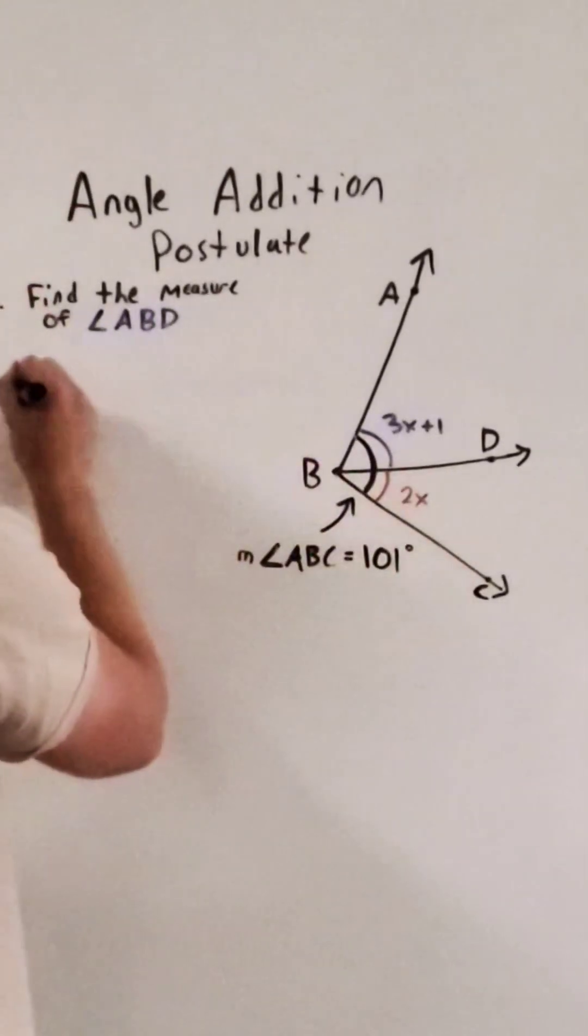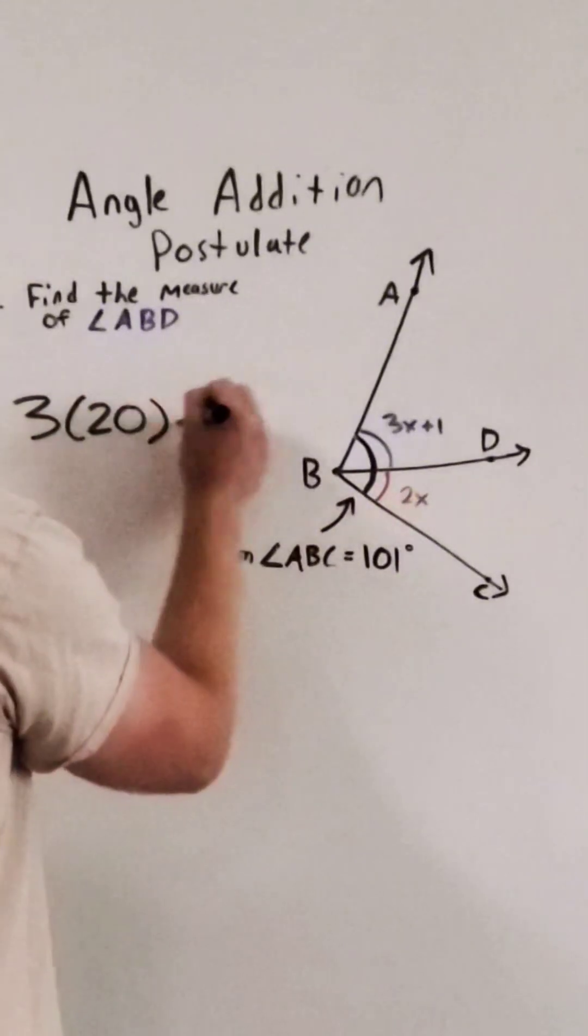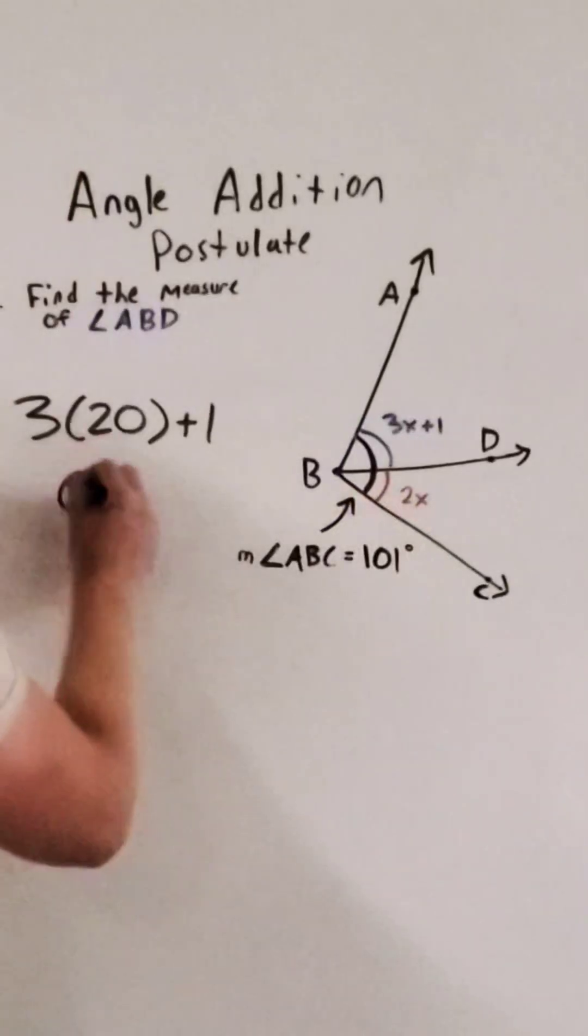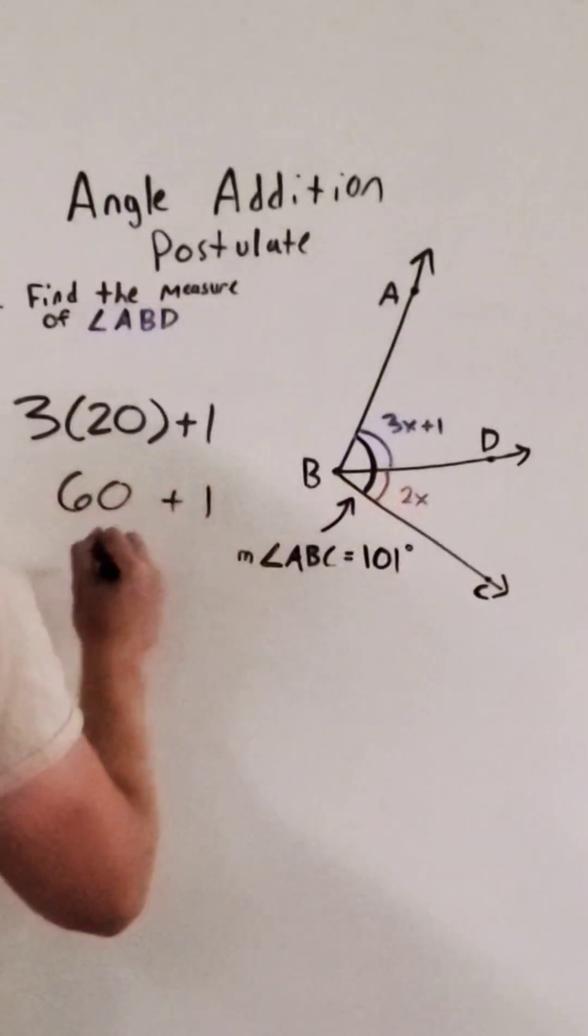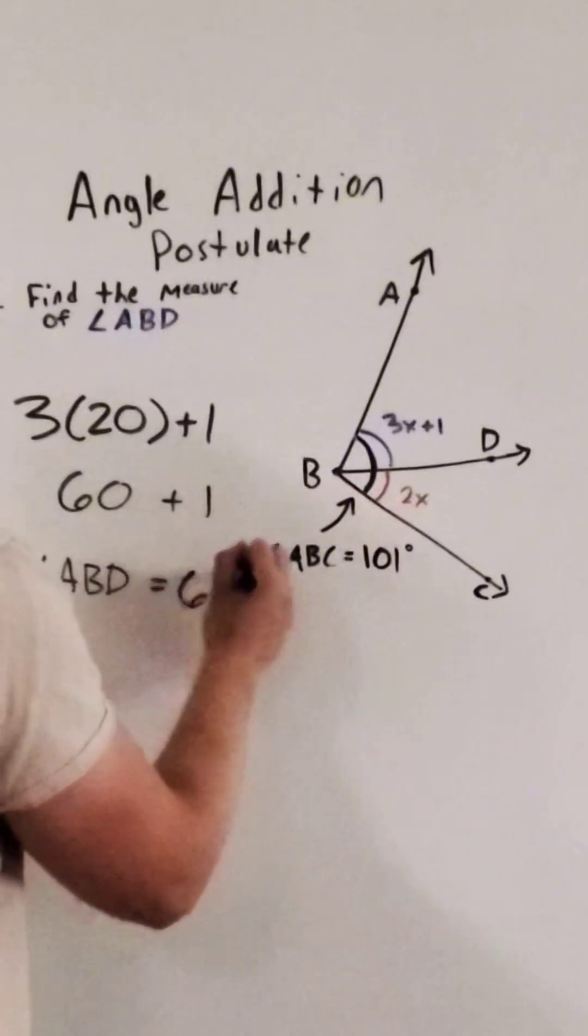So 3 times 20, which was our x, plus 1 will give us our angle measure. 3 times 20 is 60 and we end up with the measure of angle ABD equal to 61 degrees.